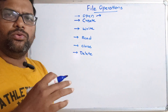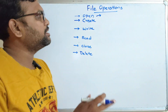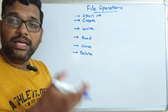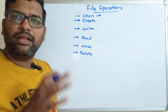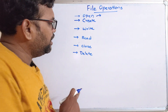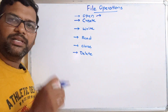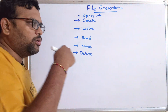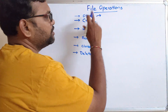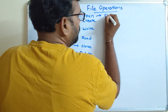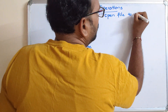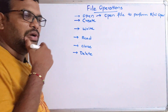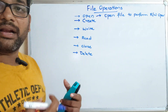The first operation is open. In order to perform any one of these operations, the first thing should be to open a file. Every file has a name — in our previous session the first attribute we saw was the name. All operations are performed by accessing the file with the help of its name. We open a file in order to perform read or write operations.